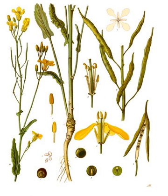Rapeseed is grown for the production of animal feed, edible vegetable oils, and biodiesel. Rapeseed was the third leading source of vegetable oil in the world in 2000, after soybean and palm oil, and is the world's second leading source of protein meal after soybean.